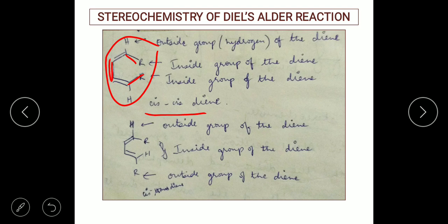In another example, H and R are called the outside group of the diene, while R and H are the inside group. Here H and R are the outside and R and H are the inside. This is an example for the cis-trans diene because on one end R and CH2 are on the same side of the double bond, while on the other end R and CH2 are trans to the double bond.